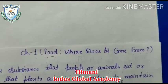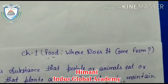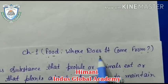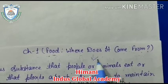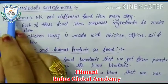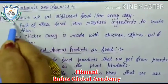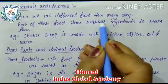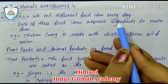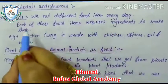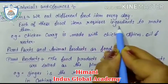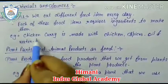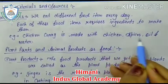Hello students, I hope my previous lecture on 'Where Does Food Come From?' is clear to you. Today we will discuss the rest of the chapter. First is food material and sources. We eat different food items every day, and different organisms need different kinds of food depending on their area. Each food item requires ingredients to make it — for example, chicken curry is made with chicken, spices, oil, and water.